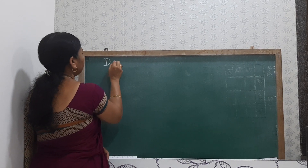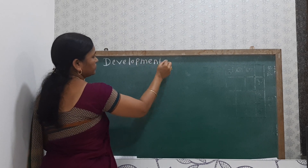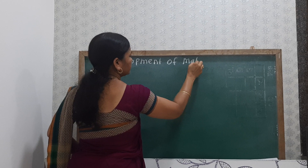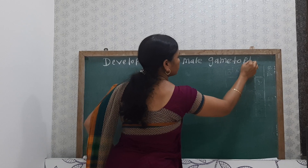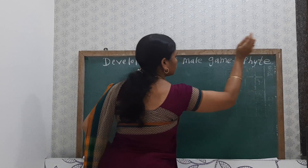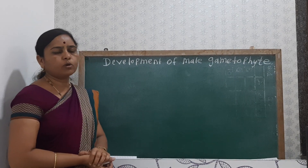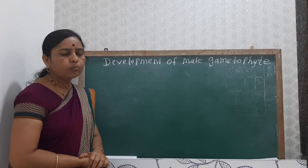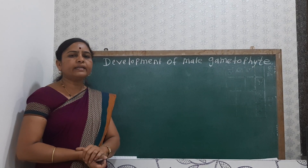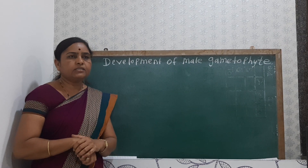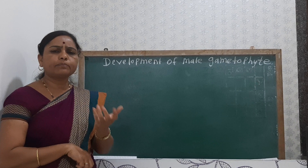This is about the development of male gametophyte. The development of male gametophyte mainly takes place from the haploid microspore or the pollen grain. The development mainly starts when the pollen grains are within the pollen sac, that is before pollination, and then again the pollen germination also takes place after pollination.